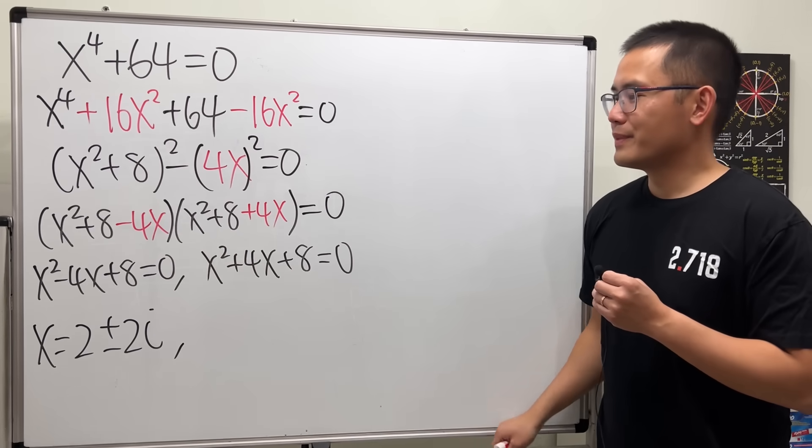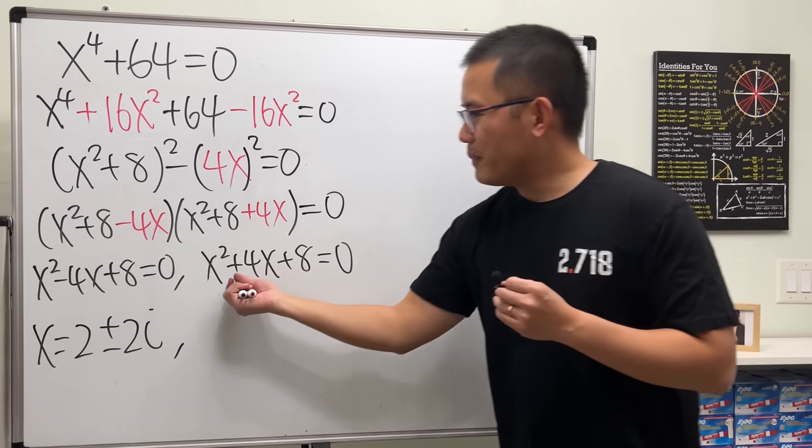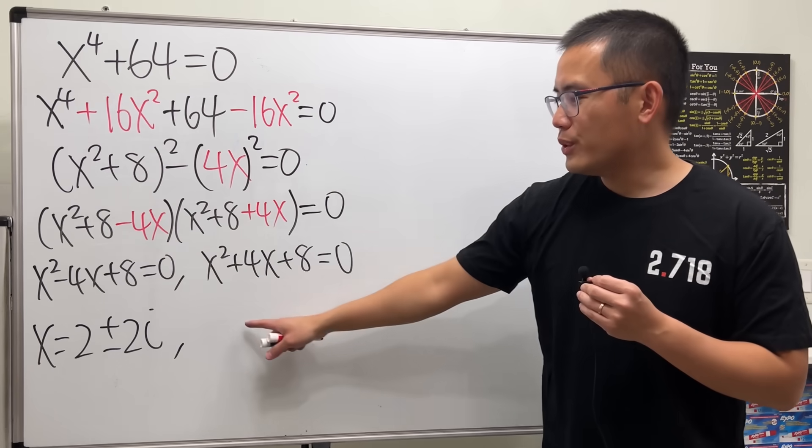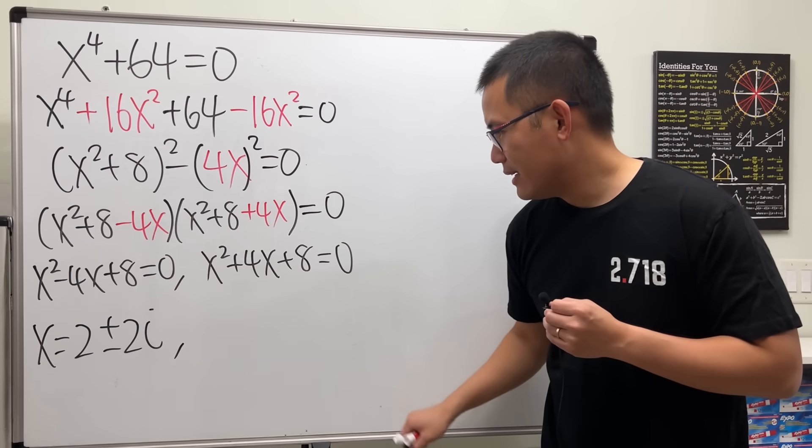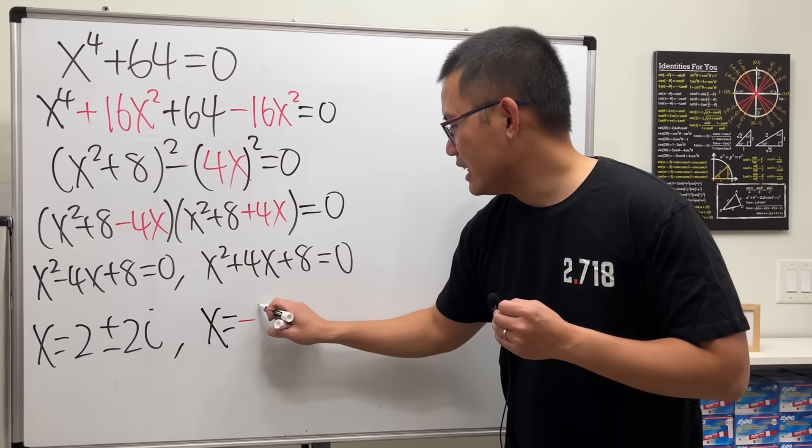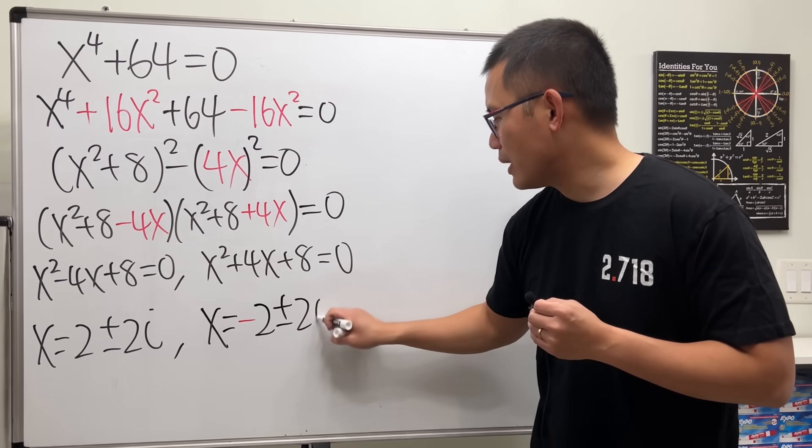And, as for the other one, well, it's just off by a negative right here, right? So, you know the answer is going to be x is equal to negative 2 plus or minus 2i.